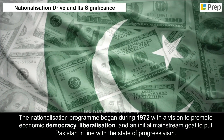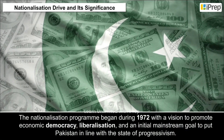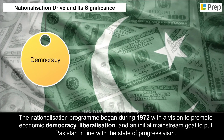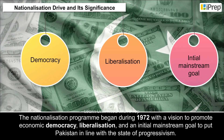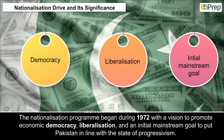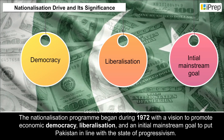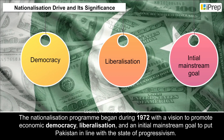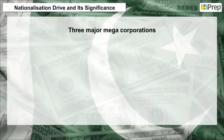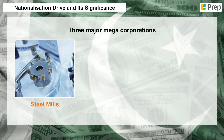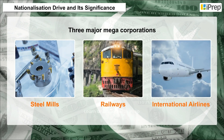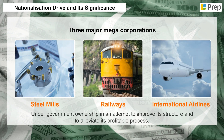The nationalization program began in 1972 with a vision to promote economic democracy, liberalization, and a mainstream goal to align Pakistan with progressivism. The country brought three major corporations — Steel Mills, Railways, and International Airlines — under government ownership to improve their structure and profitability.